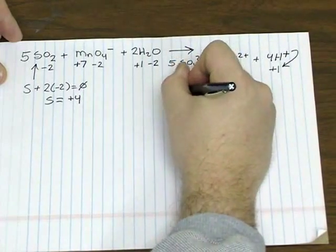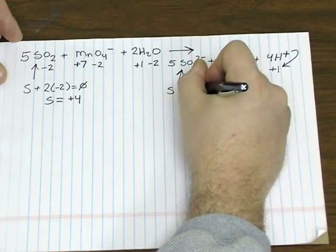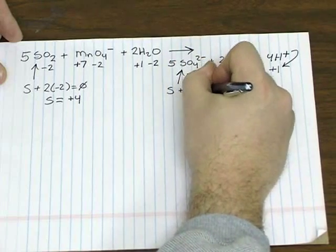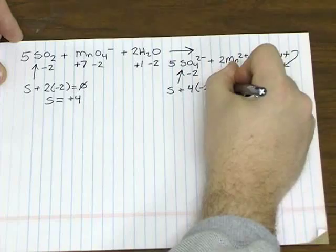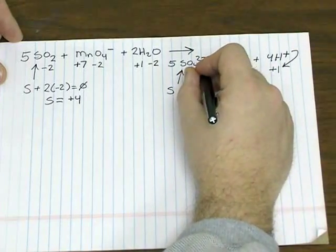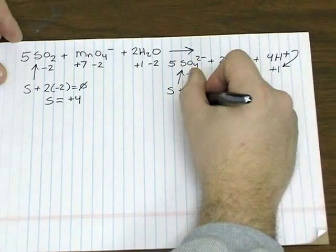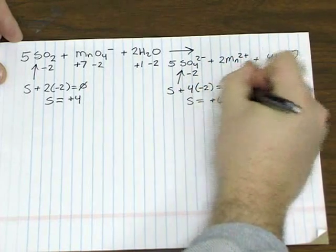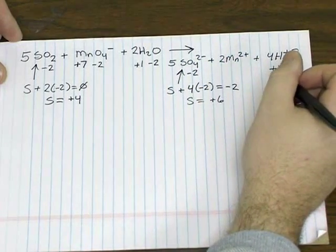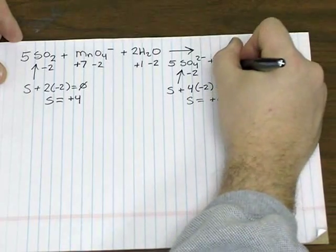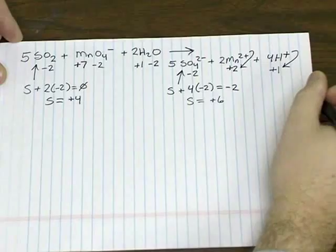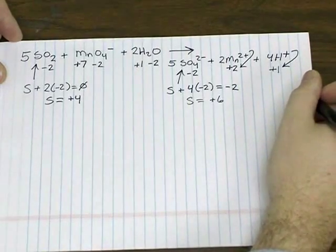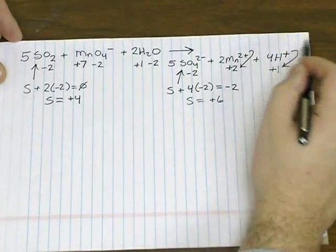For sulfur, this time sulfur and those four oxygens, which we've already said are negative two each, should equal the overall charge of negative two because it's a sulfate ion with a negative two charge. So sulfur will equal plus six. And again, manganese ion, manganese two, is going to be plus two because it's a monatomic ion just like H+.